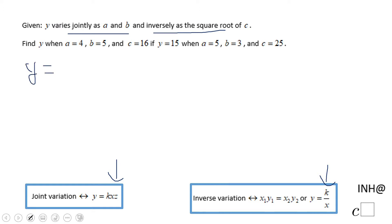Since we have joint variation, I'm going to write k times a times b, and inversely as the square root of c. This is the equation that models the given situation.